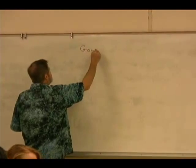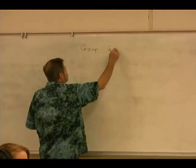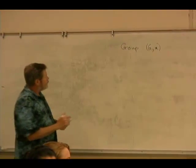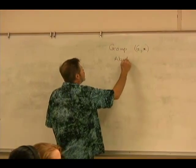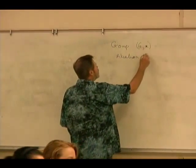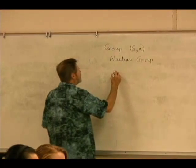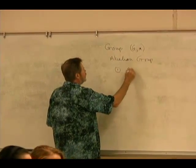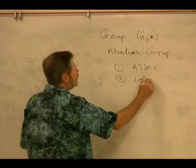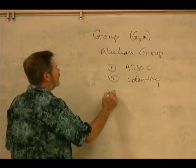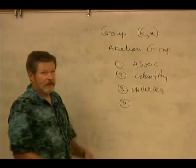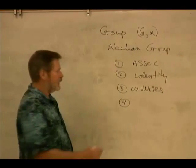If we look at a group G with binary operation star, an abelian group is one where the maximum structure is given to a set with a single binary operation. It's associative, there exists an identity, inverses exist with respect to that identity, and if it's abelian, it's commutative.